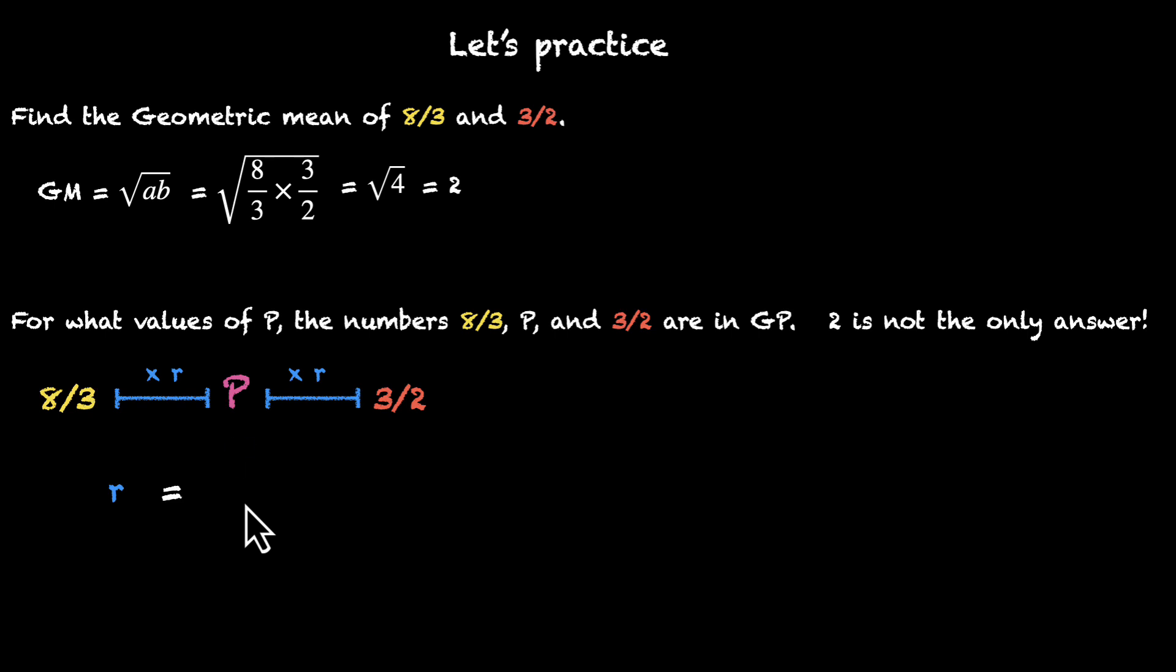So in this case, r becomes P by 8/3. That's the ratio of P and 8/3. It's also equal to 3/2 by P. And we can solve this to get P. So P squared becomes 8/3 times 3/2. P squared becomes 4. And this is where the fun is.